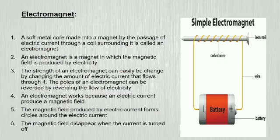What is an electromagnet? A soft metal core made into a magnet by the passage of electric current through a coil surrounding it is called an electromagnet. An electromagnet is a magnet in which the magnetic field is produced by electricity. The strength of an electromagnet can easily be changed by changing the amount of electric current that flows through it.